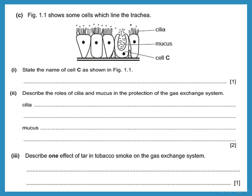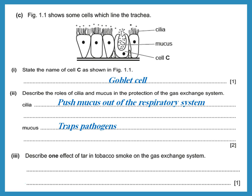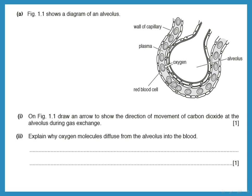The cell lining the trachea that produces mucus is the goblet cell. The roles of cilia and mucus in protecting the gas exchange system: cilia push mucus out of the respiratory system, and mucus traps bacteria, viruses, and pathogens. Effects of tar from tobacco smoke include causing lung cancer, irritating goblet cells to produce more mucus, and inhibiting cilia — allowing mucus to enter the lungs and causing coughing.